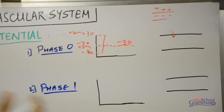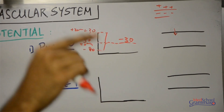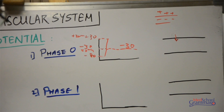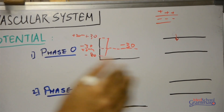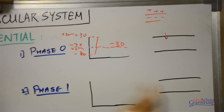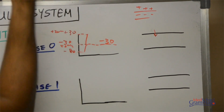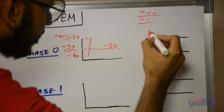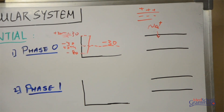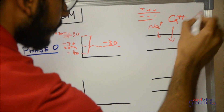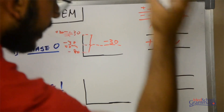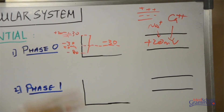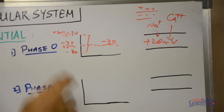As the potential reaches about minus 30 to minus 40 millivolts, the sodium channels are open and sodium is coming in, but at the minus 30 level the calcium channels also open up. Calcium starts moving in, more positive charge flows in, and the membrane potential drastically goes up to about plus 20 to plus 30 millivolts. So sodium diffuses in initially and then calcium contributes to complete depolarization in phase 0.